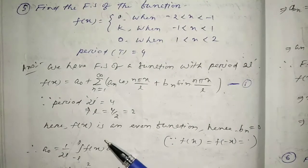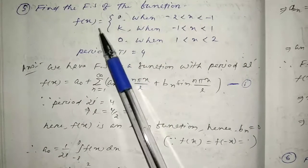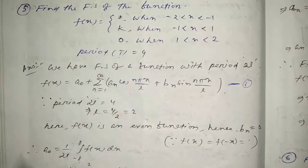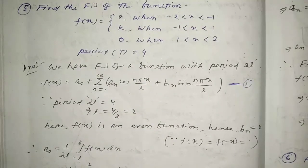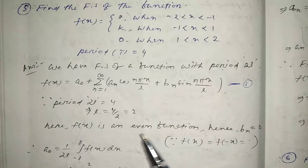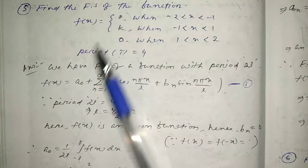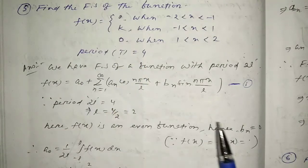Here, f(x) is an even function. For an even function, the sine coefficients bn = 0. For an odd function, the cosine coefficients an = 0. Since f(x) is an even function, bn = 0. We can verify this from the theory part covered previously.